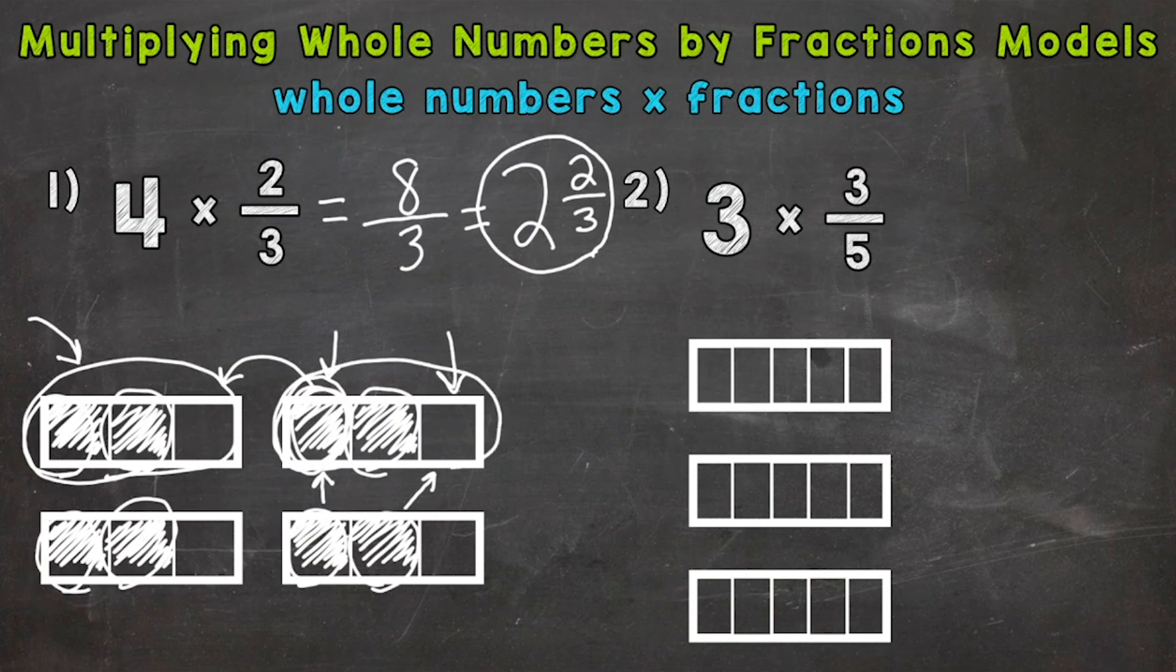And that would give us two wholes filled in, right, if we shifted some things around. And then we're left with two-thirds here. So two and two-thirds. So our model matches that mixed number as well. It just takes a little bit of shifting around in order to make it work.